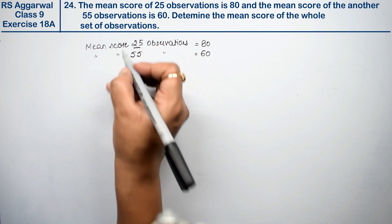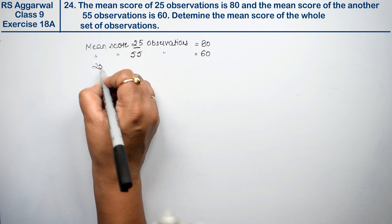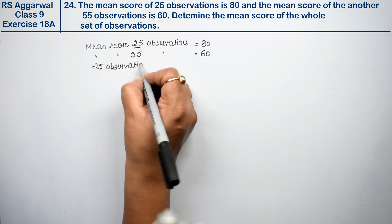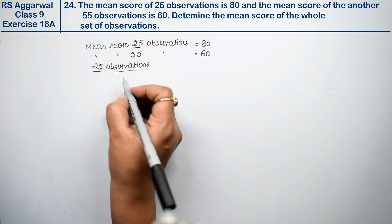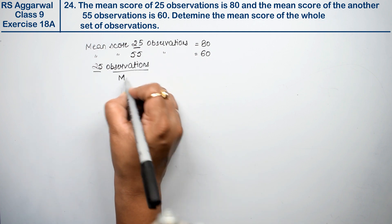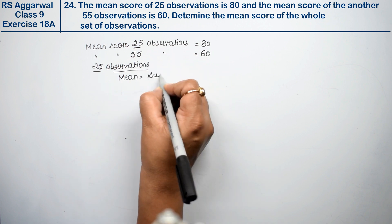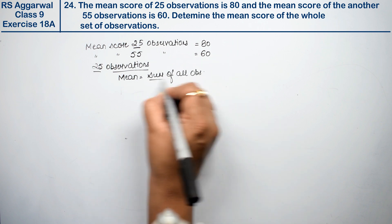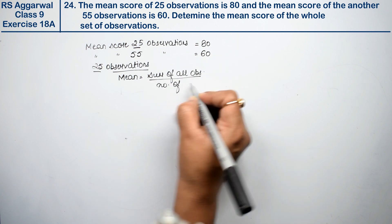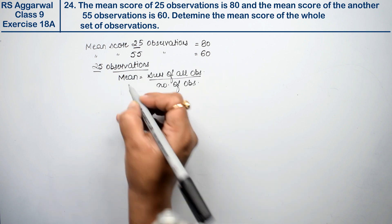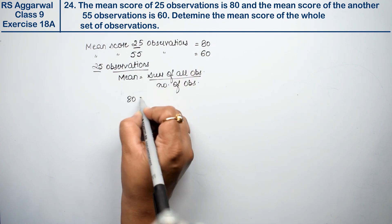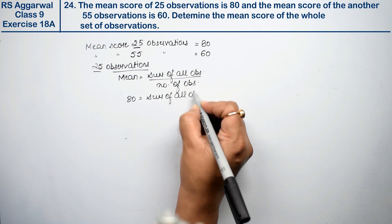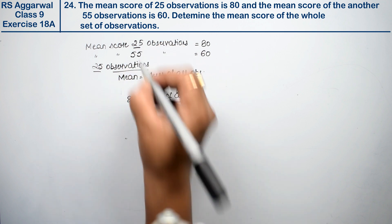How do we get out the mean score? First we use the mean formula. Mean formula is: sum of all observations divided by number of observations. So mean equals sum of all observations divided by number of observations.